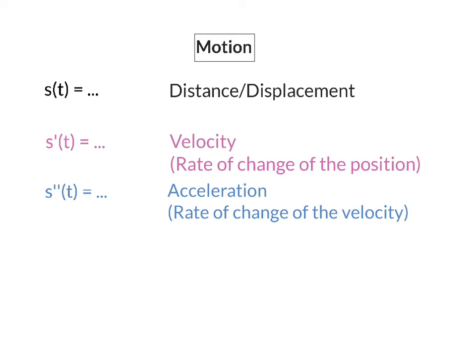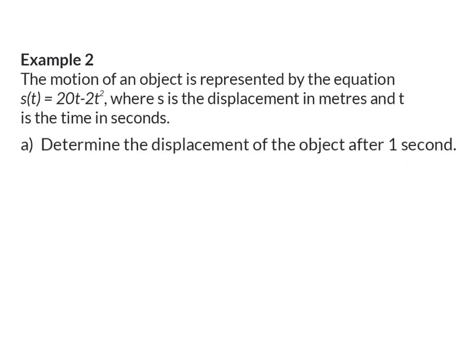Let's have a look at an example. Example 2: The motion of an object is represented by the following equation, where s is the displacement in meters and t is the time in seconds. Determine the displacement of the object after one second. We take the given equation and substitute t with one, and we find that the displacement after one second is 18 meters.